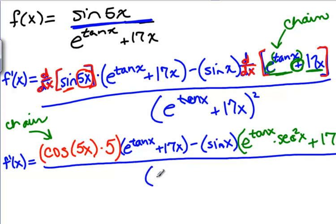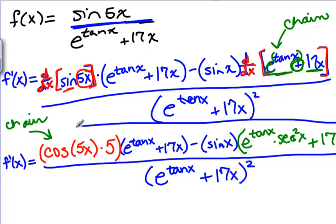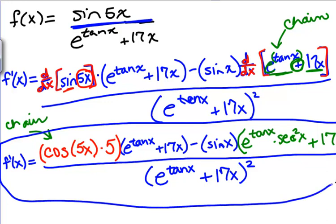We finish the quotient rule by dividing by e to the tangent of x plus 17x, all squared — and that will be our final answer. When doing these big derivative problems, we absolutely do not want you to simplify. Please leave your answer like this.